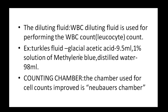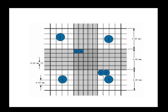The composition of the WBC diluting fluid includes: Glacial acetic acid 9.5 ml, 1% solution of methylene blue, and distilled water 98 ml. We also need a counting chamber. The chamber used for WBC counting is called the Neubauer counting chamber.